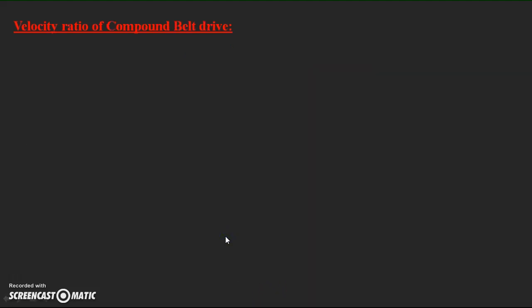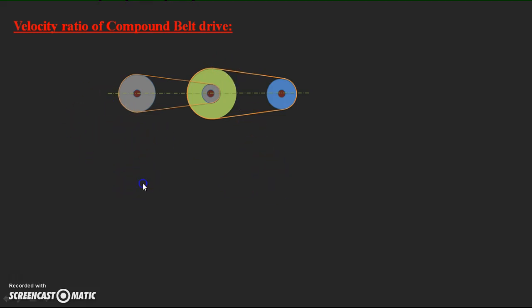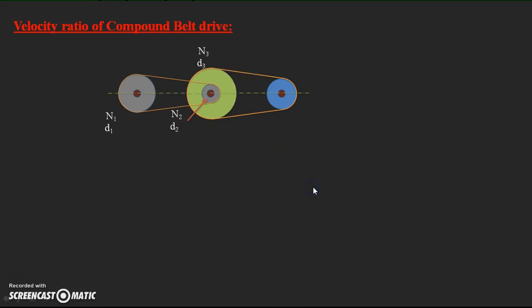Similarly, let us discuss the velocity ratio of a compound belt drive, which has more than one driver and follower. Assume speed and diameter N1 and D1 for the first pulley, N2 and D2 for the second pulley, N3 and D3 for the third pulley, and N4 and D4 for the final pulley.